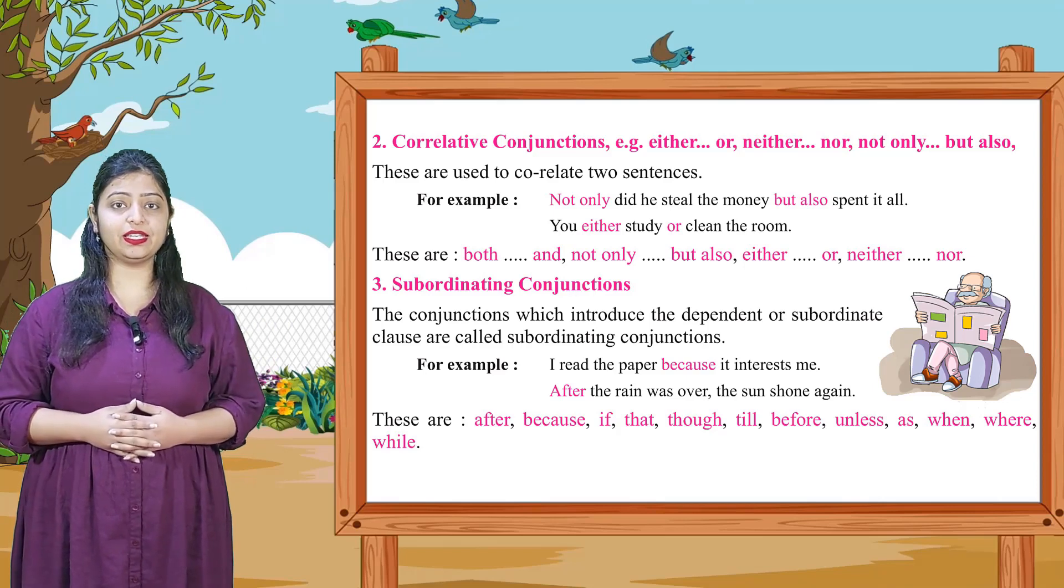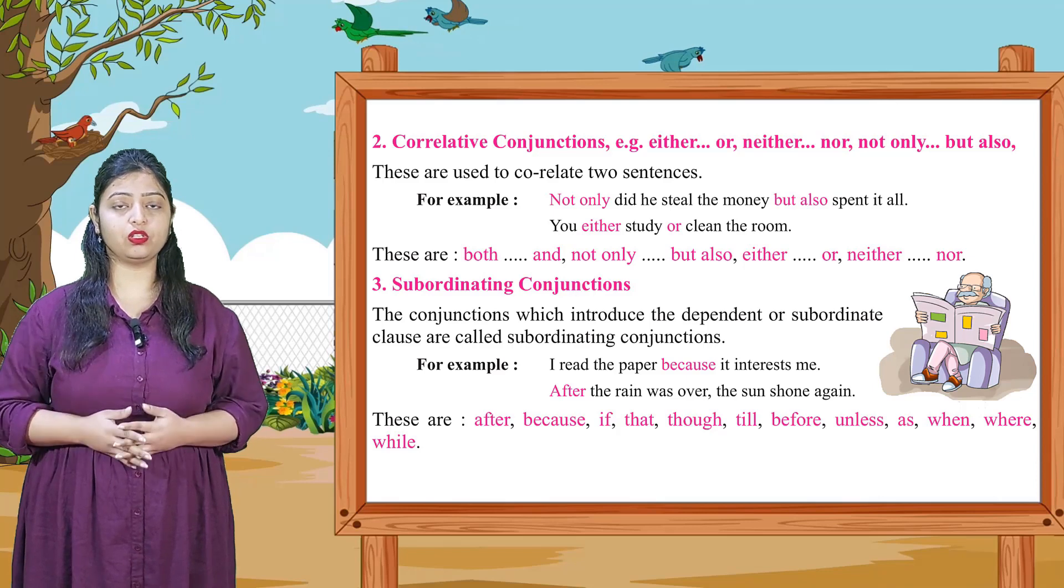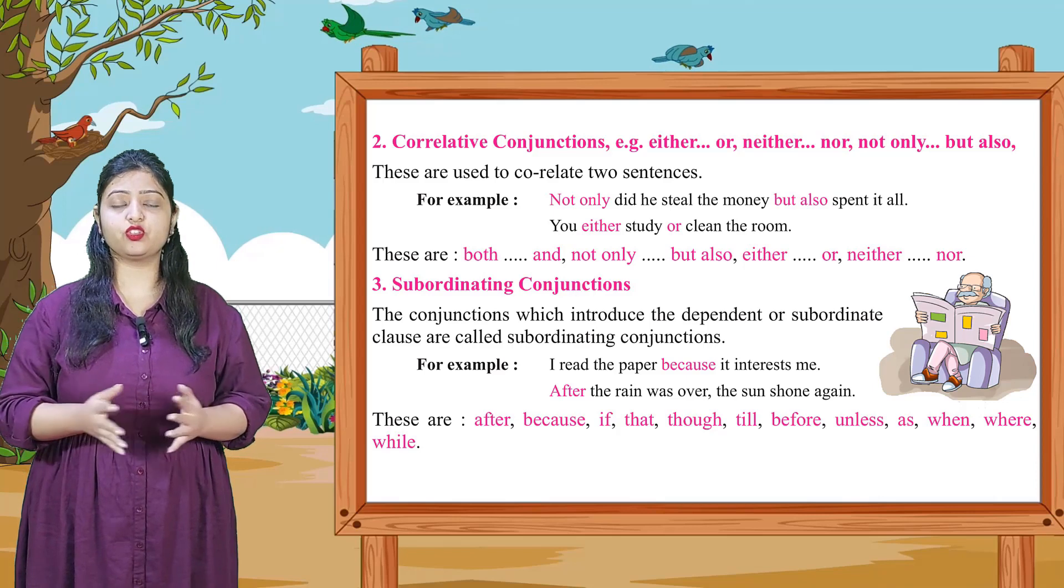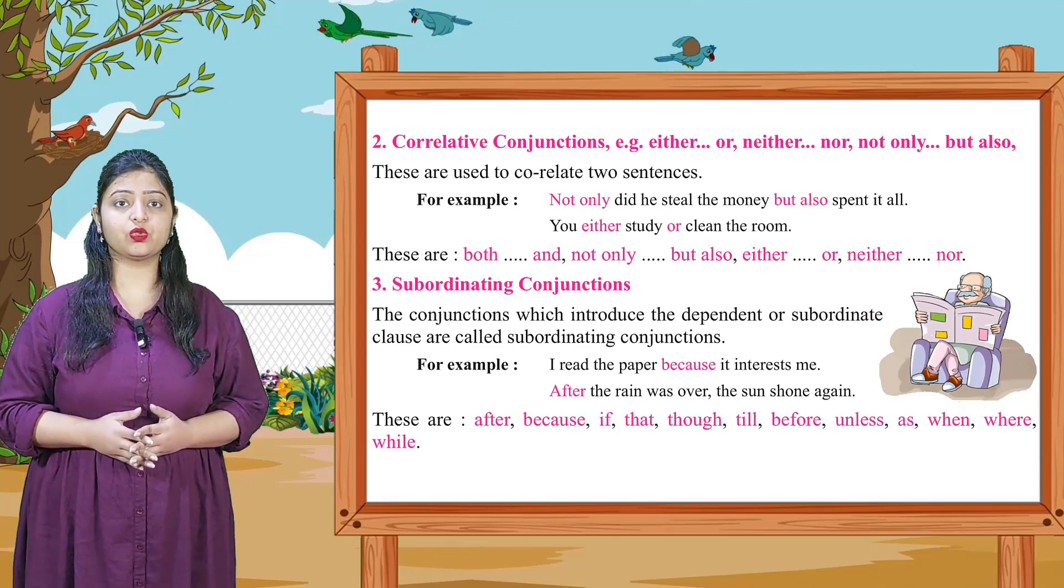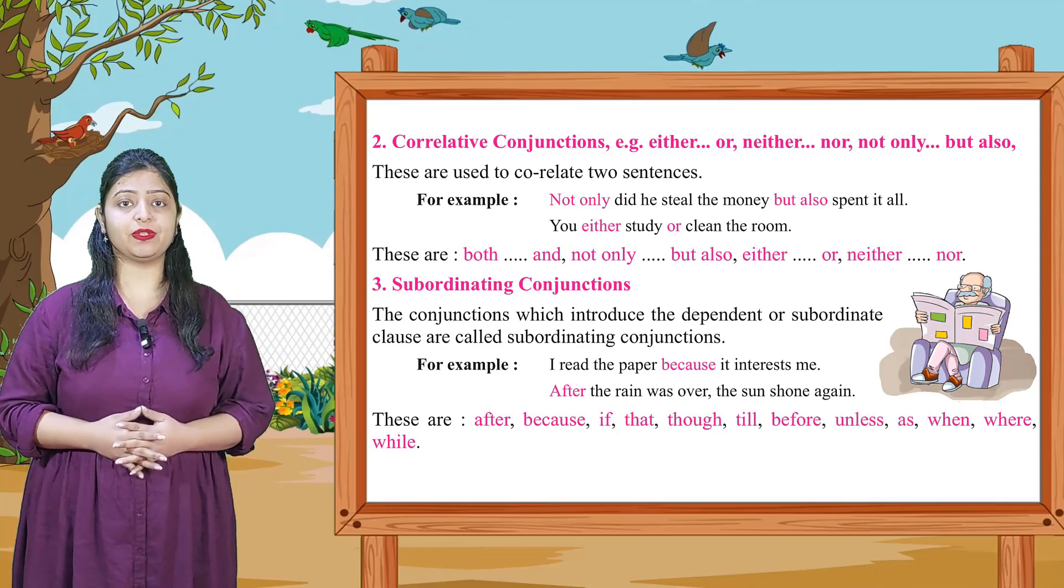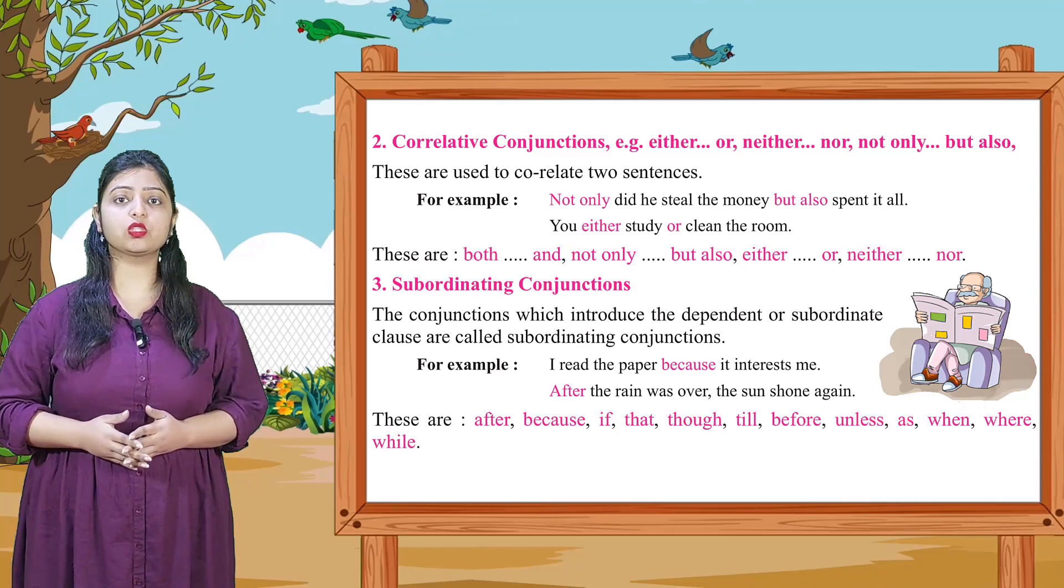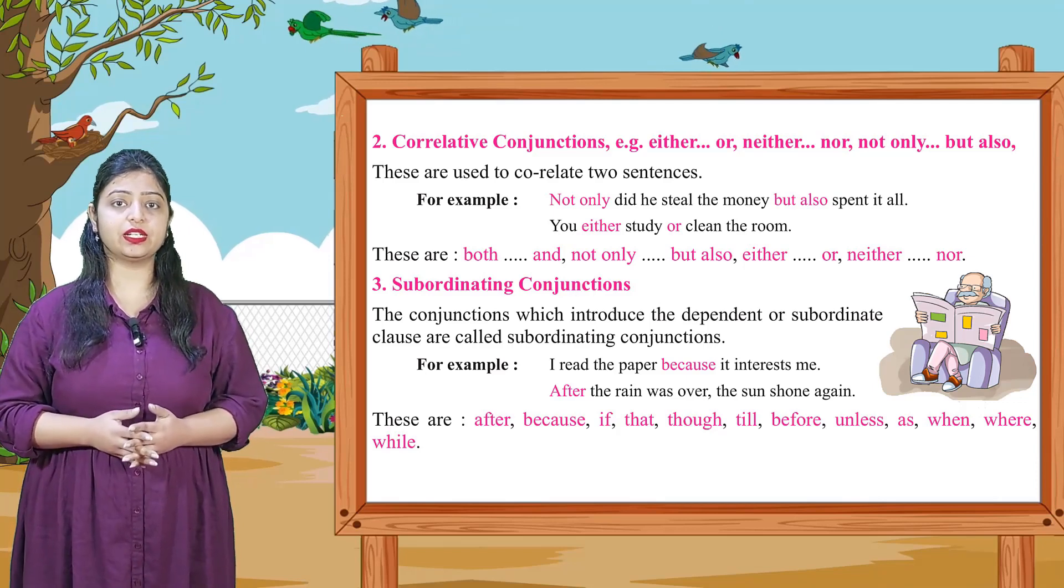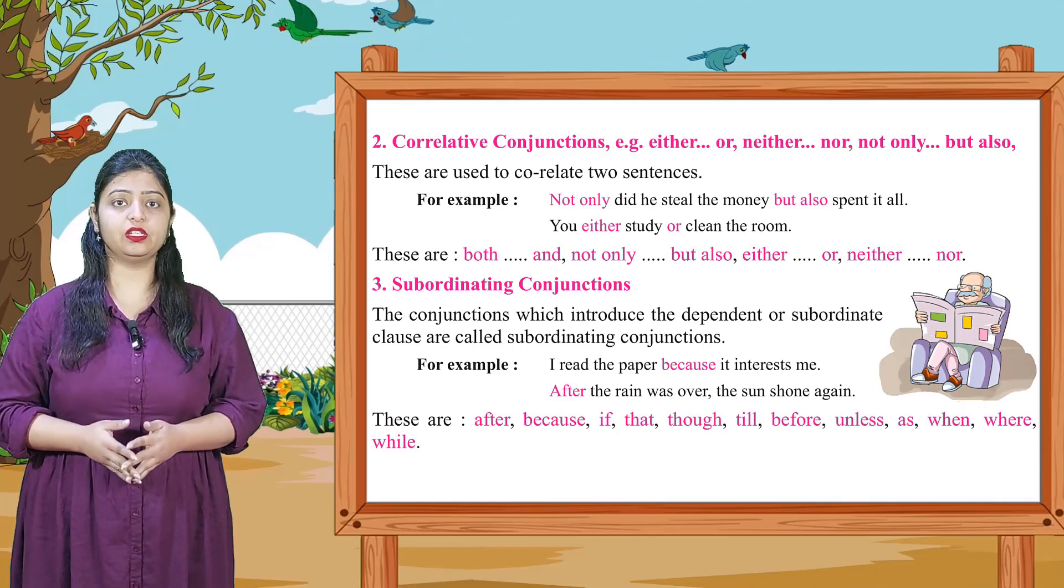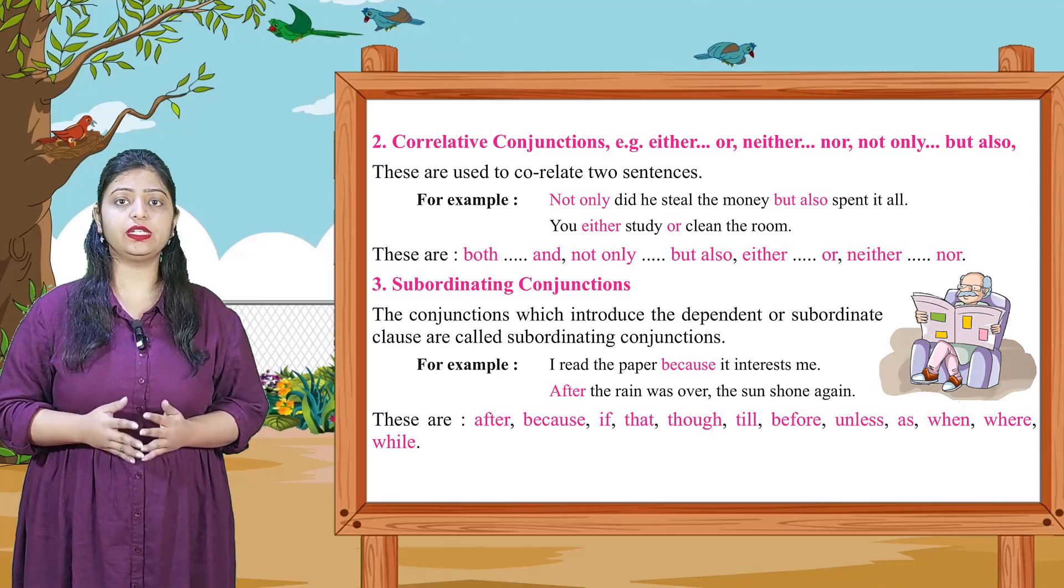Correlative conjunctions. Either, or, neither, nor, not only, but also. These are used to correlate two sentences. Examples: Not only did he steal the money but also spent it all. You either study or clean the room. These are both and, not only, but also, either, or, neither, nor.